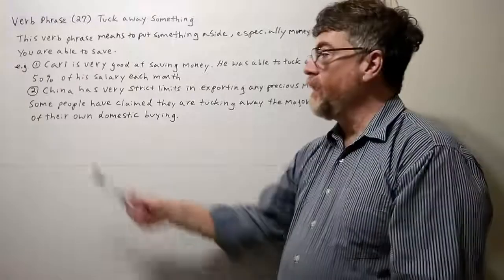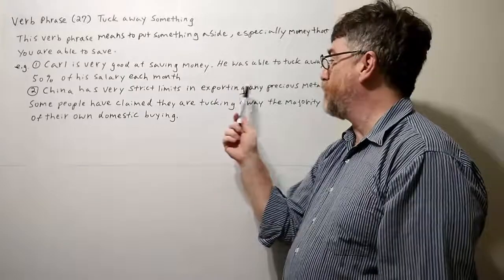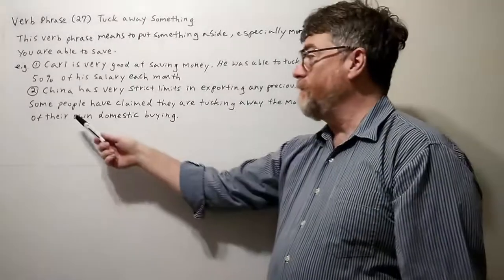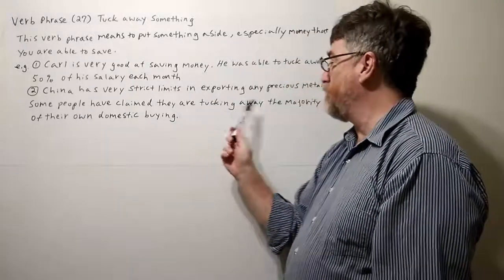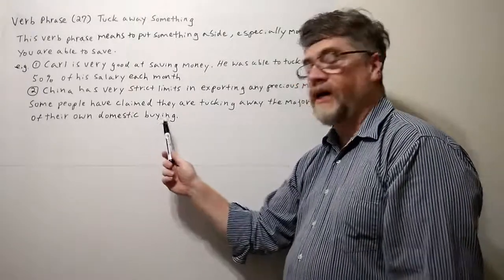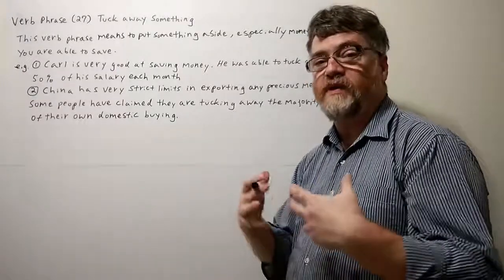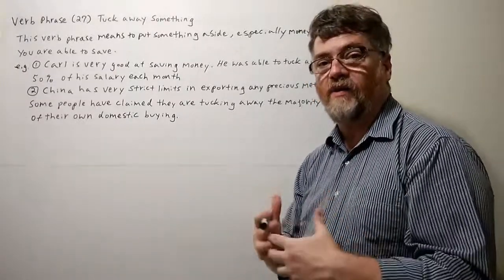Let's look at number two. China has very strict limits in exporting any precious metals. Some people have claimed that they are tucking away the majority of their own domestic mining. Whatever they are producing of gold and silver, they're probably keeping the far majority of it and tucking it away.